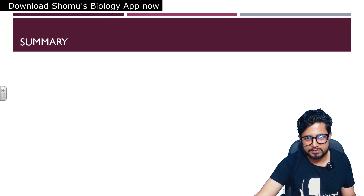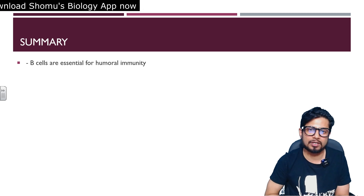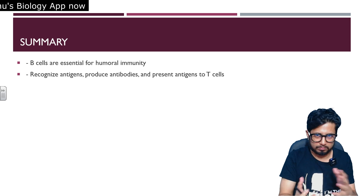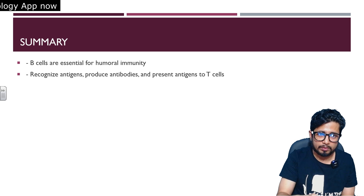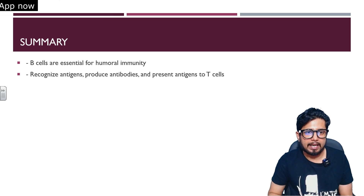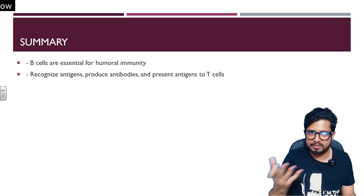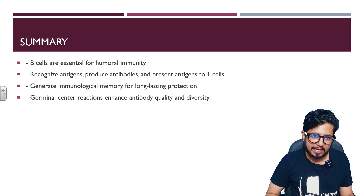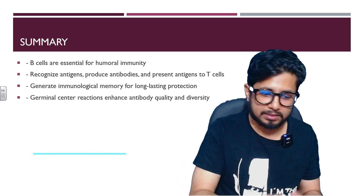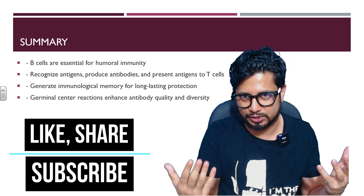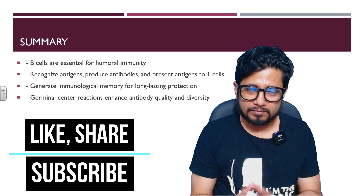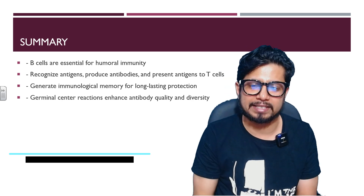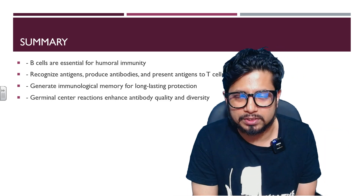In summary: B cells are essential to humoral immunity, also known as antibody-mediated immunity. They recognize antigens via BCRs directly or with T cell help, produce antibodies by differentiating into plasma cells, and generate immunological memory through memory B cells for long-lasting protection. Germinal center reactions enhance antibody quality and diversity. Thank you for watching — please like, share, and subscribe for more immunology videos.